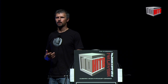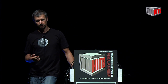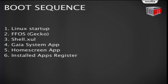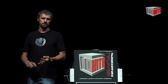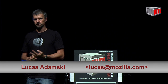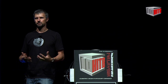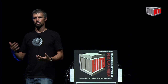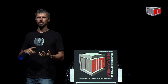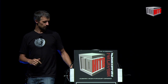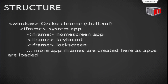As part of any OS, we have to protect the OS itself. On boot: Linux startup, then Gecko starts, which starts shell.zool — a container that loads the Gaia system app, which loads the home screen app, which registers core system installed apps handling web activities, SMS handling, telephone handling, radio state, Wi-Fi, and other core system operations. In code it looks like a window (the Gecko Chrome shell.zool), containing an iframe for the system app, inside that an iframe for the home screen app, and so forth.